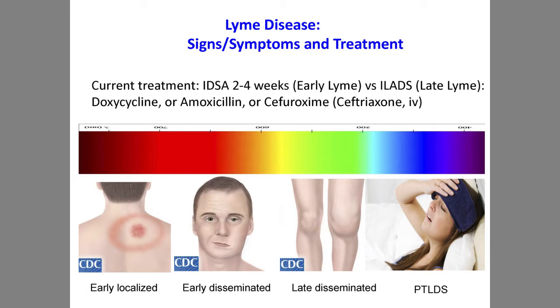Lyme disease has various stages: the early localized EM rash stage, moving on to early disseminated form such as Bell's palsy or carditis, a late stage with arthritis, and then PT-LDS. At the early stage the disease is relatively easy to cure. The current IDSA guideline recommends two to four weeks of antibiotic treatment with doxycycline, amoxicillin, or cefuroxime. For late-stage arthritis, IV ceftriaxone is sometimes used. But when it reaches the PT-LDS stage, the current treatment doesn't work very well.